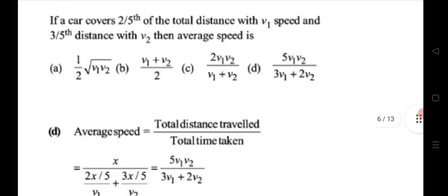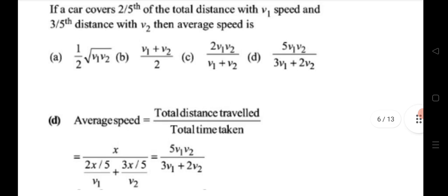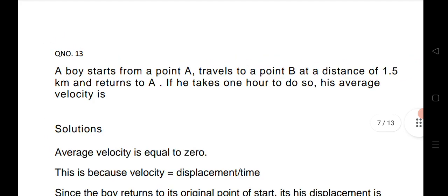Twelfth question: a car covers 2/5 of the total distance with velocity v₁ and 3/5 with velocity v₂ — find the average speed. The average speed formula is total distance divided by total time taken. Let total distance be x; find t₁ and t₂ using time = distance / speed, then substitute into the average speed formula.